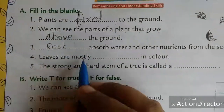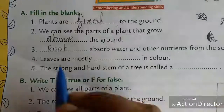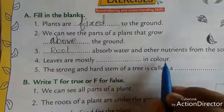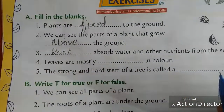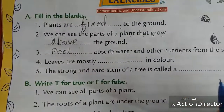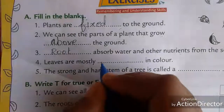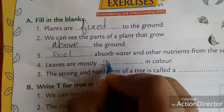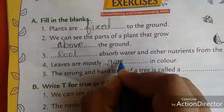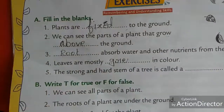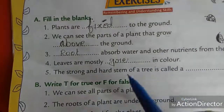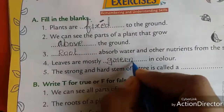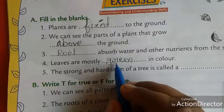Leaves are mostly blank in colour. Leaves are mostly green in colour. So write here: green.